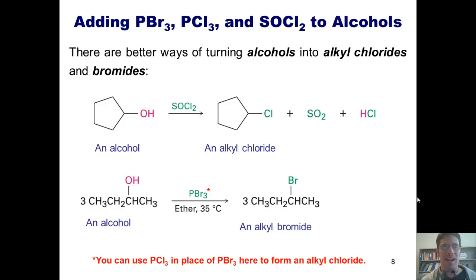What's the take-home from this slide? Well, if you want to convert an alcohol into an alkyl chloride, you can react it with SOCl2 or PCl3 instead of hydrochloric acid. Similarly, if you want to convert an alcohol into an alkyl bromide, you can react it with PBr3.